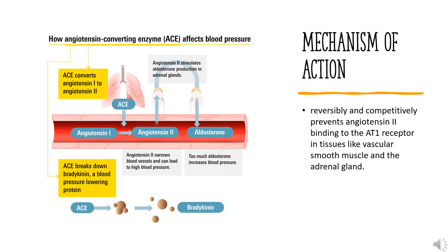Mechanism of Action. Candesartan selectively blocks the binding of angiotensin II to AT1 in many tissues, including vascular smooth muscle and the adrenal glands. This inhibits the AT1-mediated vasoconstrictive and aldosterone-secreting effects of angiotensin II and results in an overall decrease in blood pressure. Candesartan is greater than 10,000 times more selective for AT1 than AT2. Inhibition of aldosterone secretion may increase sodium and water excretion while decreasing potassium excretion.